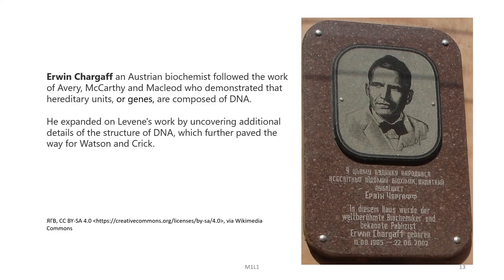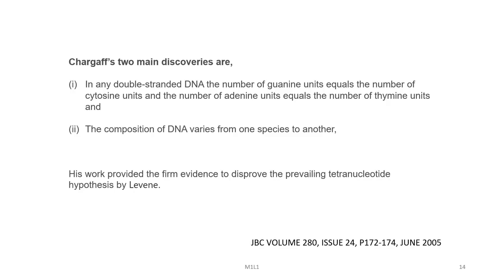Erwin Chargaff was an Austrian biochemist who followed the work of Avery, McCarty, and MacLeod and demonstrated that hereditary units or genes are composed of DNA. He expanded on Levene's work by uncovering additional details of the structure of DNA, which further paved the way for Watson and Crick's model. The two main discoveries by Chargaff are: one, in any double-stranded DNA the number of guanine units equals the number of cytosine units; and two, the composition of DNA varies from one species to another.